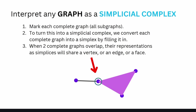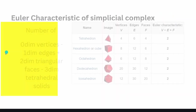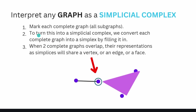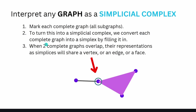First, mark each complete graph and all subgraphs — in our case, four nodes with one complete subgraph triangle. Second, convert each complete graph into a simplex by filling it in. Third, when two complete graphs overlap, their representations as simplices will share a vertex — or in higher dimensions, an edge or even a surface element. So we can interpret any graph as a simplicial complex.